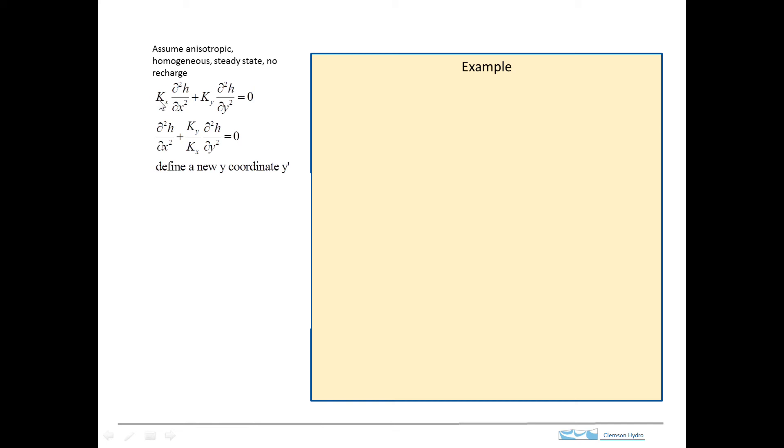This is the hydraulic conductivity in x and y direction. When we solve this for isotropic conditions, these two conductivity terms were the same and they canceled out. And all we had was the second derivative in x plus the second derivative in y equals zero.